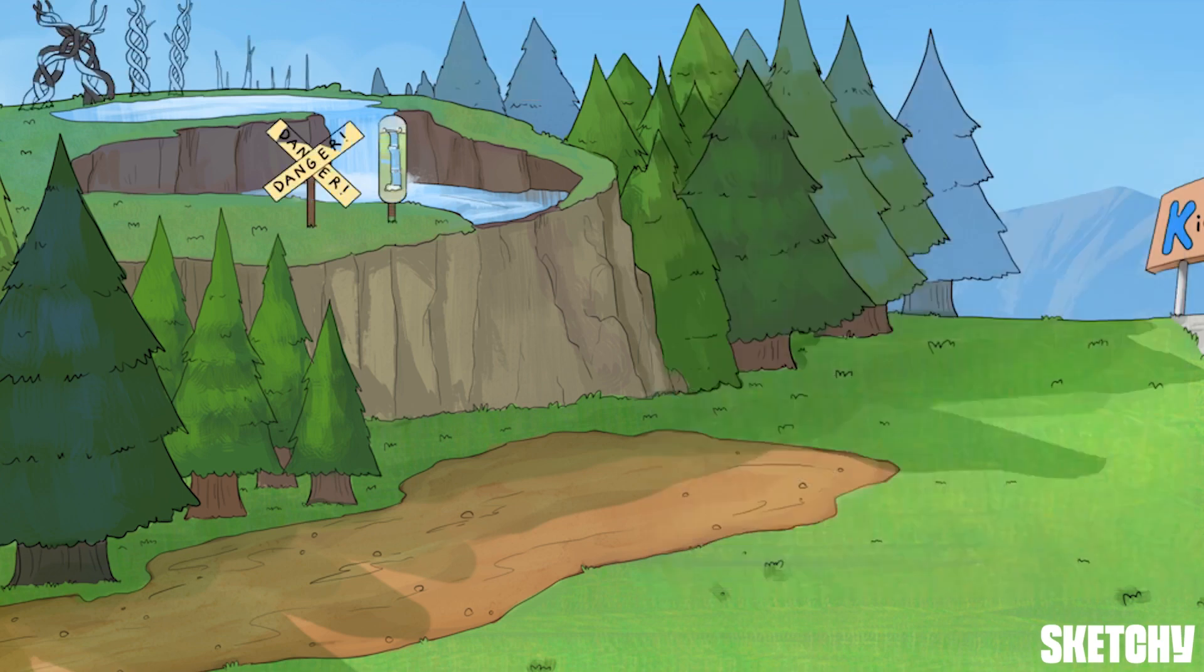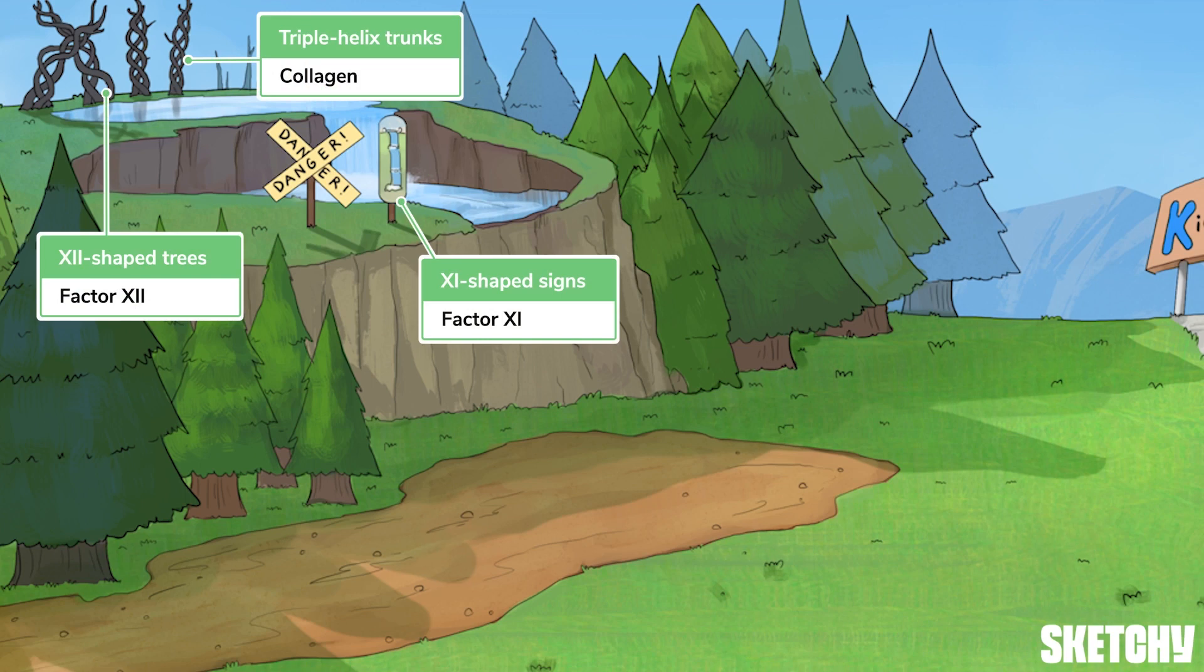This pathway, also known as the contact activation pathway, begins with factor 12. Factor 12 is activated on contact with activated platelets or on contact with collagen or basement membrane following damage to endothelial cells. Hence why these 12-shaped dead trees with collagen-like triple helix trunks are at the top of our cascade.